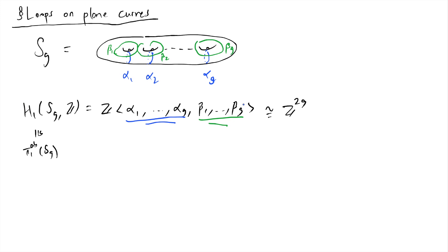This isomorphism means that whenever you give me a loop inside of Sg, I can deform it basically onto this skeleton into the union of these blue and green things. The loop you've given me will traverse each of these loops some number of times, an integer number of times. That will be the representation in this basis.